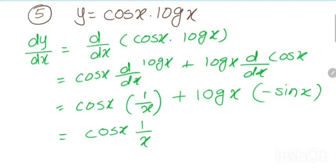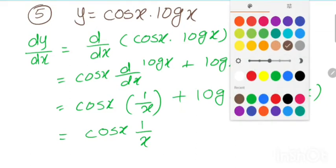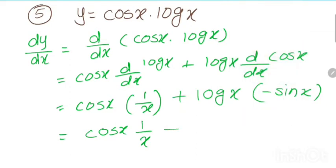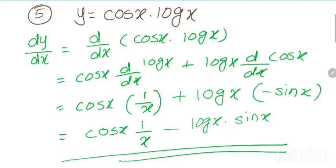Since we have plus and minus, the result becomes minus. So the answer is cos x times 1 by x minus log x times sin x. That is cos x over x minus log x sin x. This is our answer.